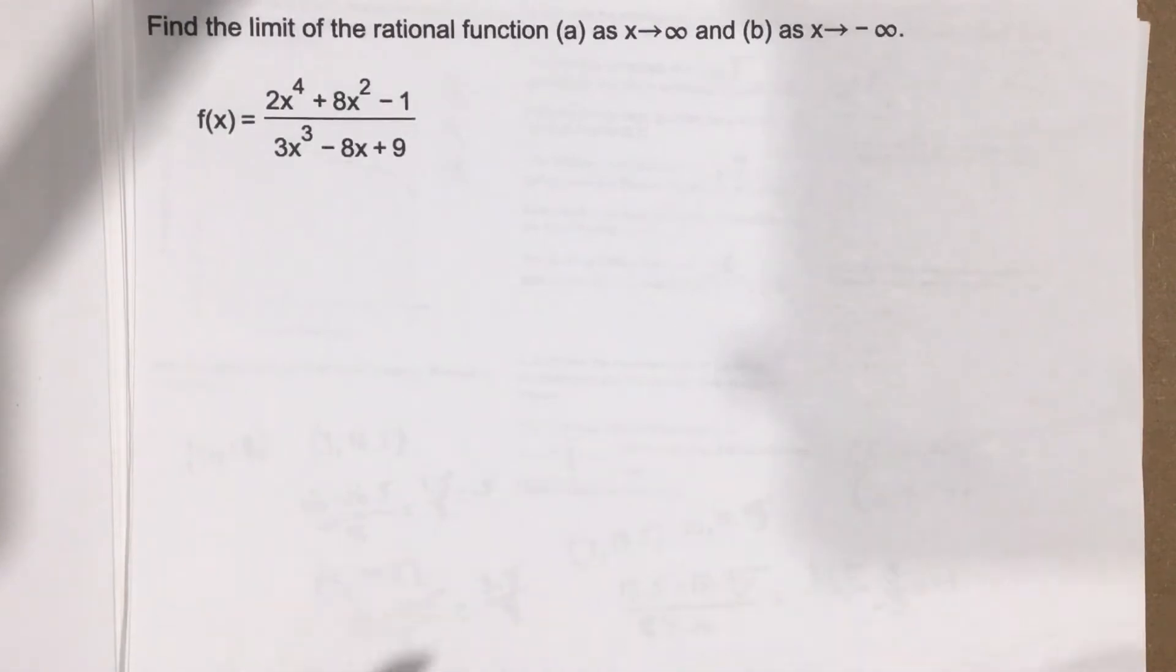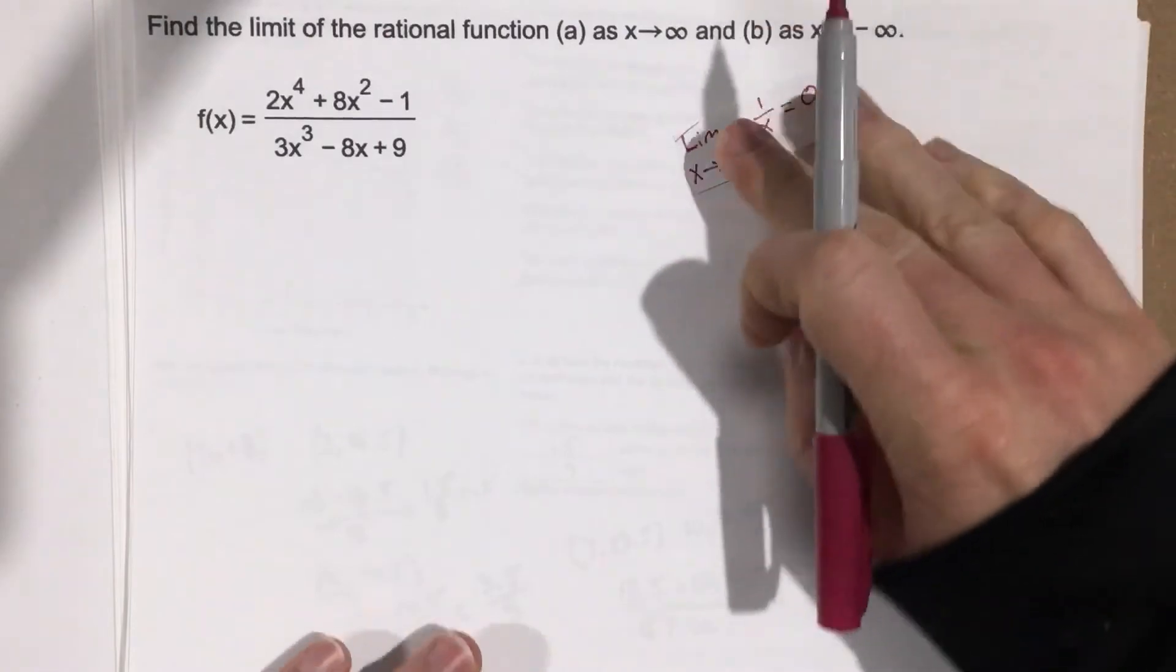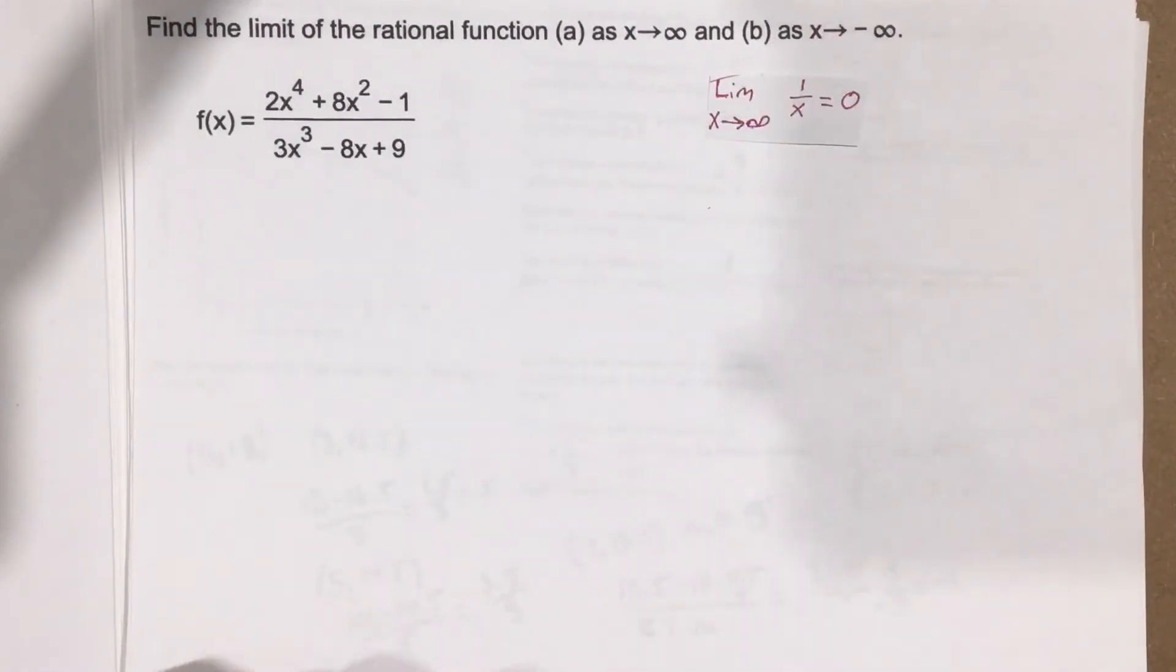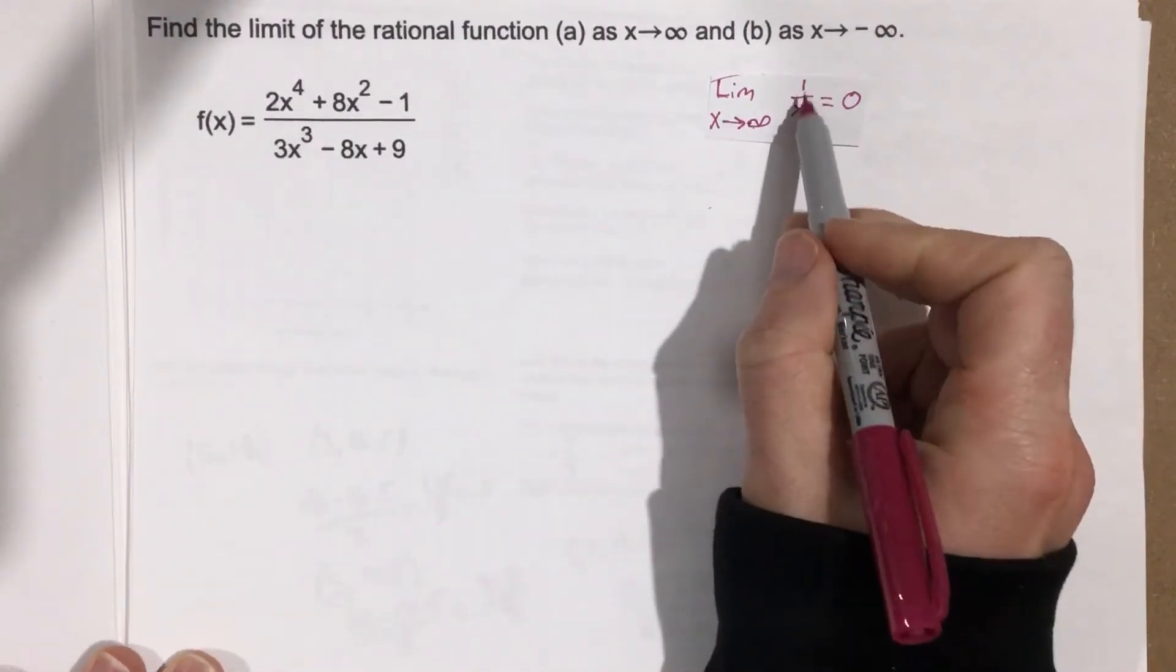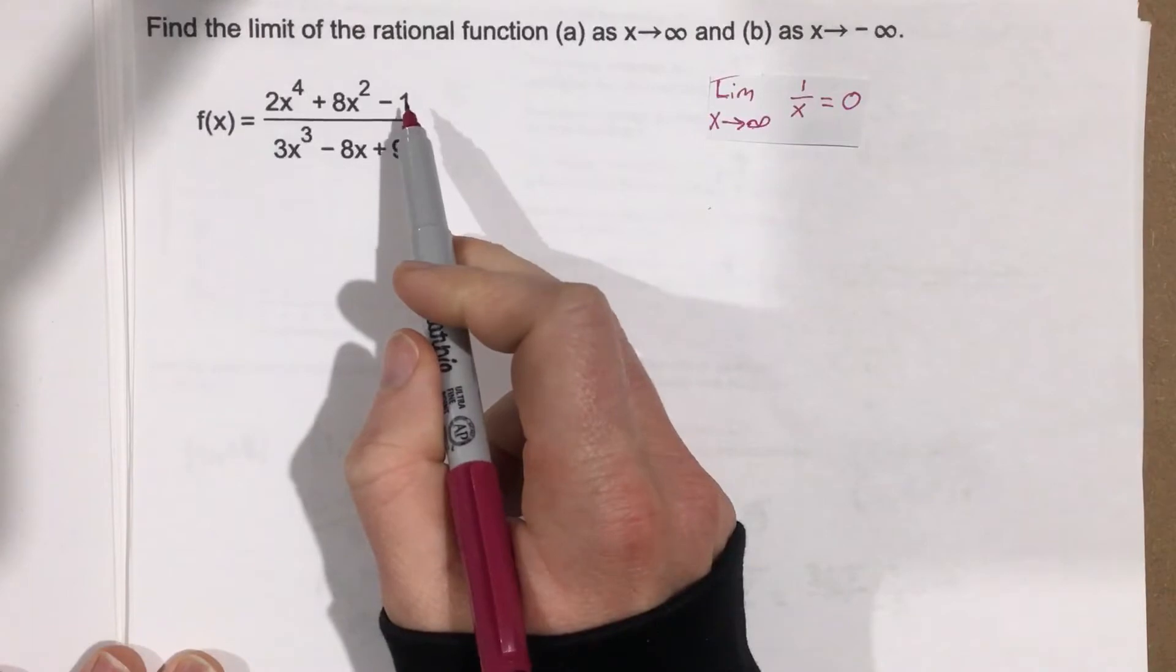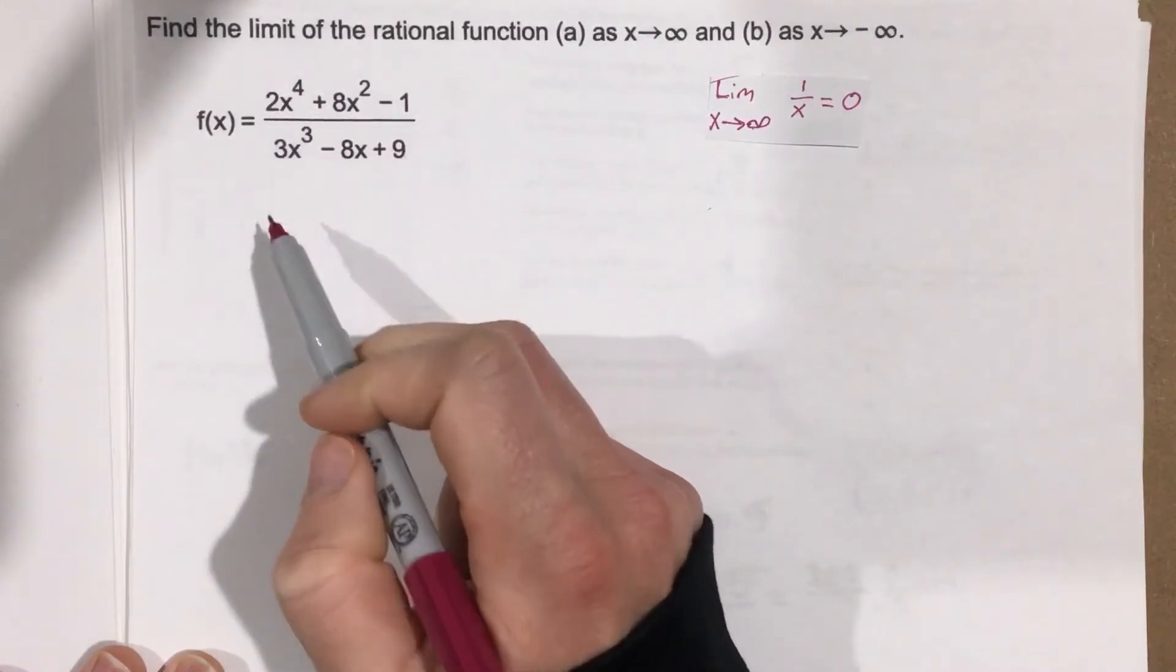They give us another rational, and again we're going to use this property that we came up with in the first couple problems to our advantage. So we want to get some 1 over x terms in this rational.